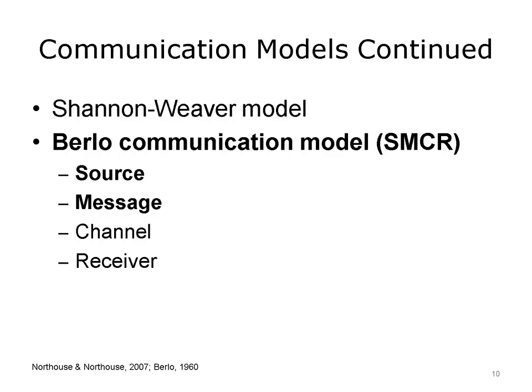The second model is the Berlow communication model, also known as the SMCR model — source, message, channel, receiver model. The first component, the source, refers to the sender of the information. Attributes of the source include the communication skills of the sender and his or her attitudes, knowledge, social system, and culture. In short, the message is affected by the attributes or characteristics of the source. For example, a health IT analyst's knowledge enables her to use technical terms that make her message clear to her colleagues. Her communication skills come into play when she must make this same information clear to clinical personnel who might not understand the technical jargon.